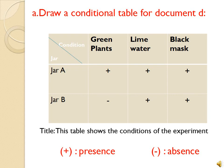Now let's solve some exercises about Document D. I want you to take a paper and try to draw a conditional table for Document D on your own, then continue the video to check if it is correct. To draw a conditional table, put the conditions in the first row and the jars in the first column.